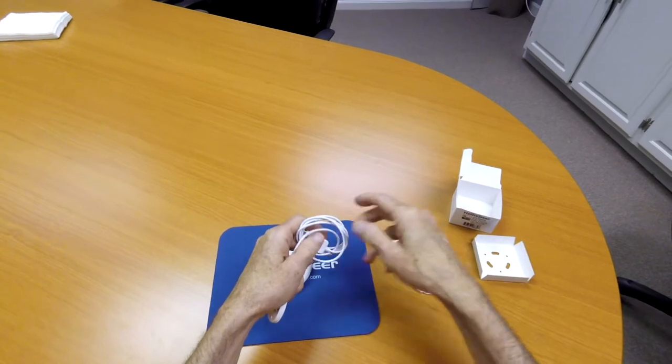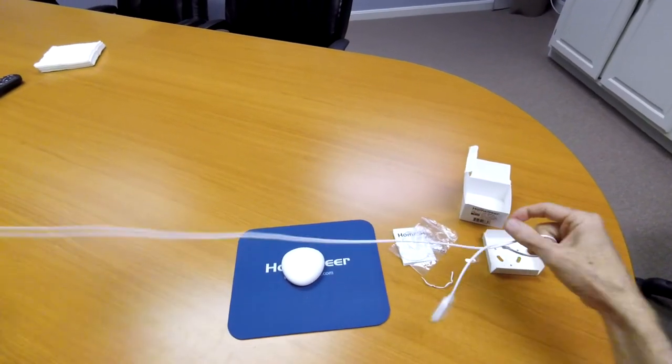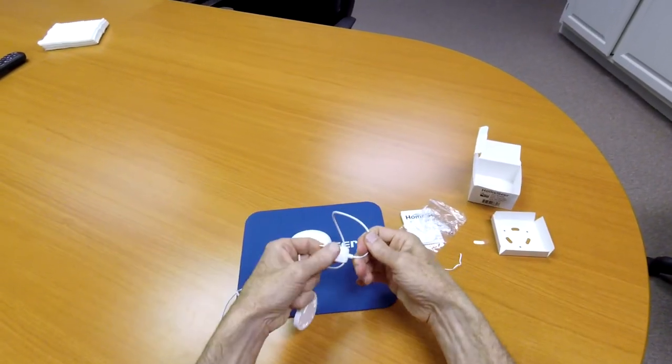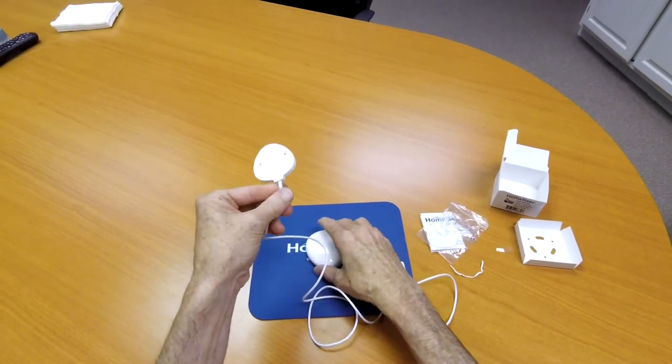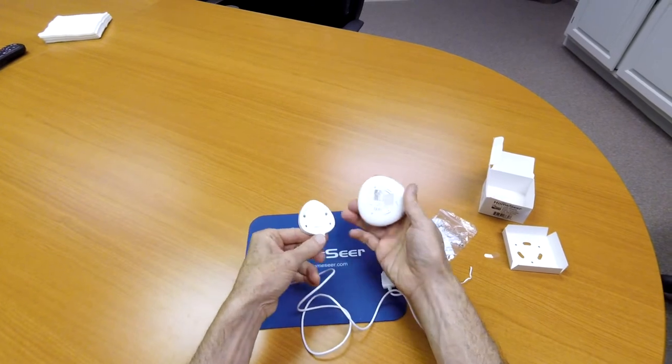Once installed you'll be able to take that probe cable and put it wherever you want to detect leaks. Now that's not the only way that you can install the leak sensor, you'll be able to use it as a freestanding unit too.